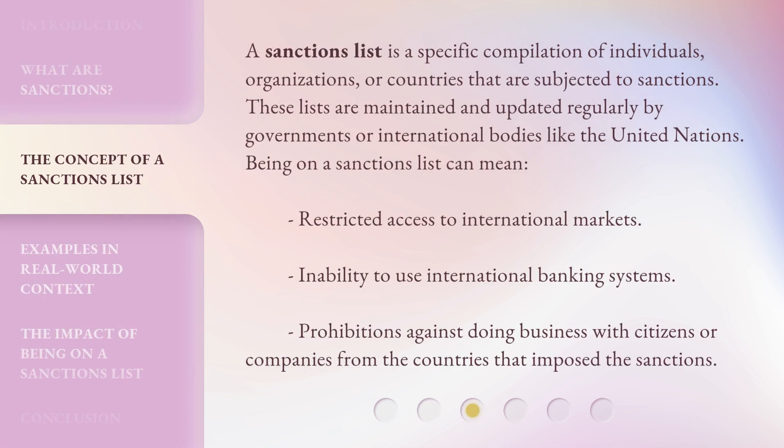A sanctions list is a specific compilation of individuals, organizations, or countries that are subjected to sanctions. These lists are maintained and updated regularly by governments or international bodies like the United Nations. Being on a sanctions list can mean restricted access to international markets, inability to use international banking systems, and prohibitions against doing business with citizens or companies from the countries that impose the sanctions.